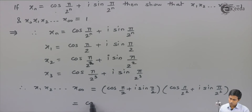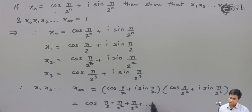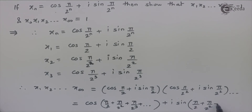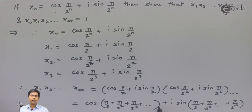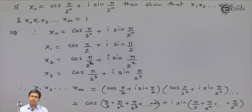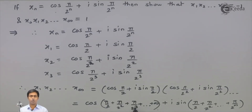So we get cos(π/2 + π/2² + π/2³ + ... + π/2^∞) + i·sin(π/2 + π/2² + π/2³ + ... + π/2^∞). This is a summation of infinite terms. We can take π as common, leaving (1/2 + 1/2² + 1/2³ + ... ∞)·π inside both the cosine and sine. We need to find the sum of this infinite series using rules of GP.